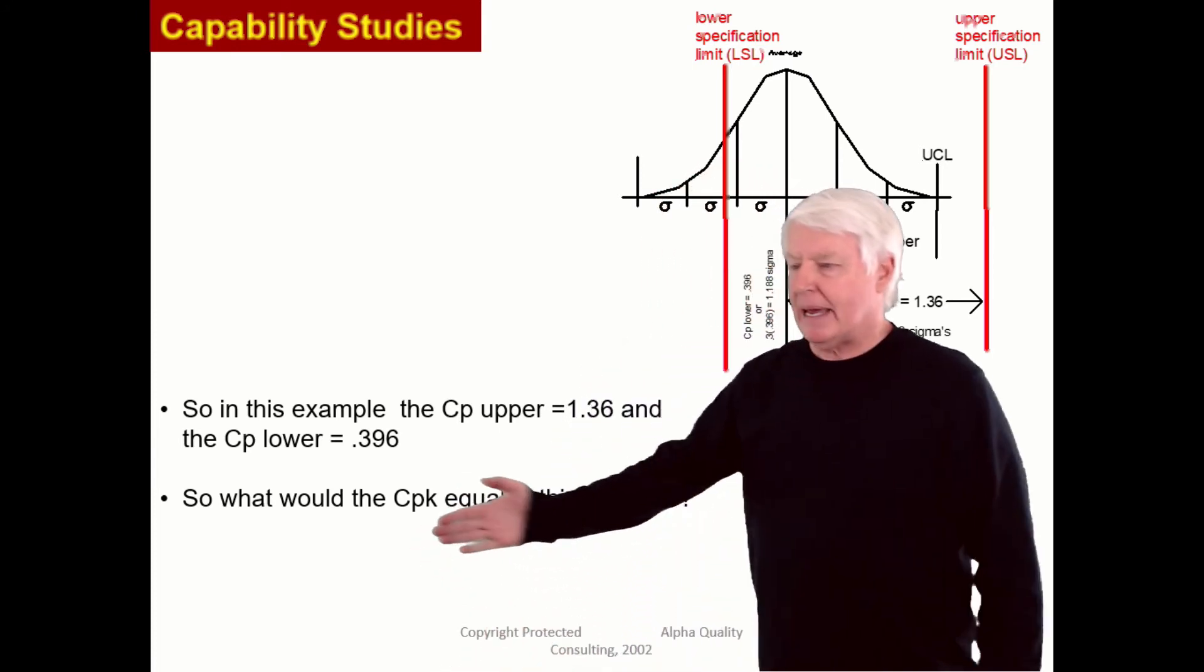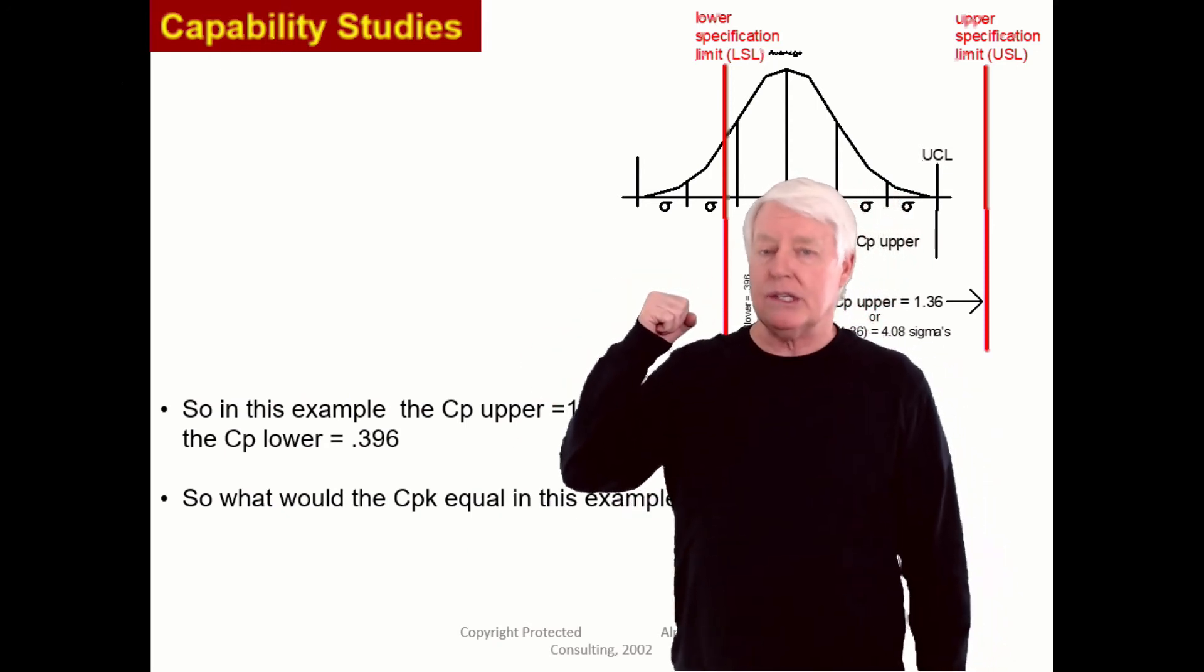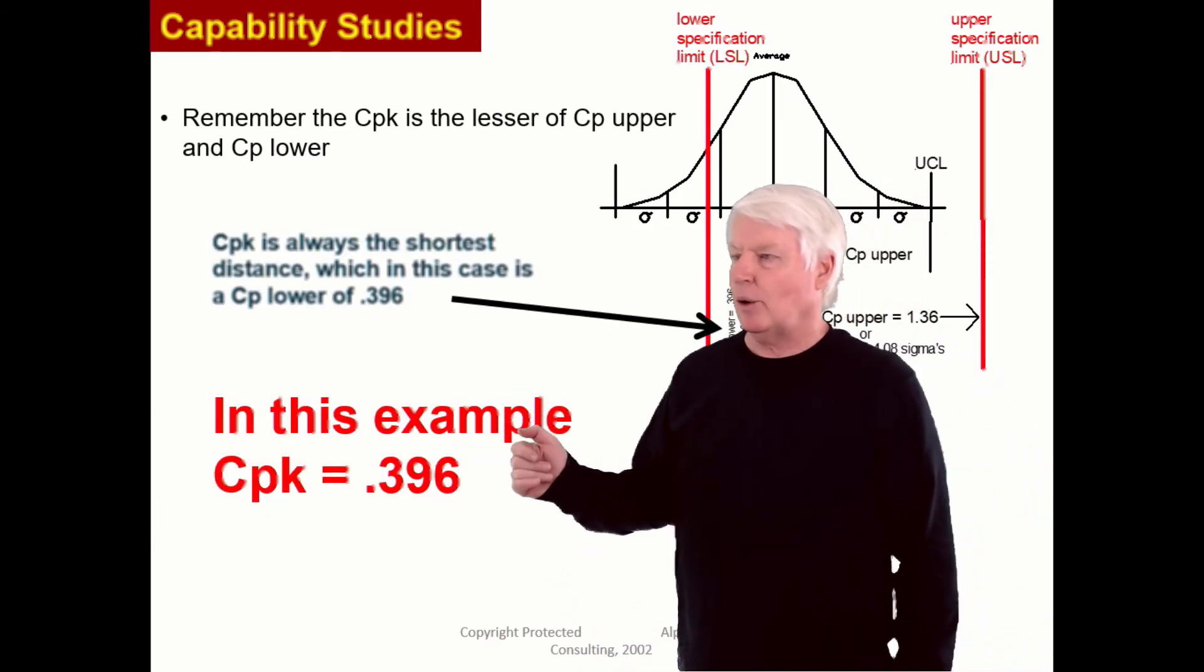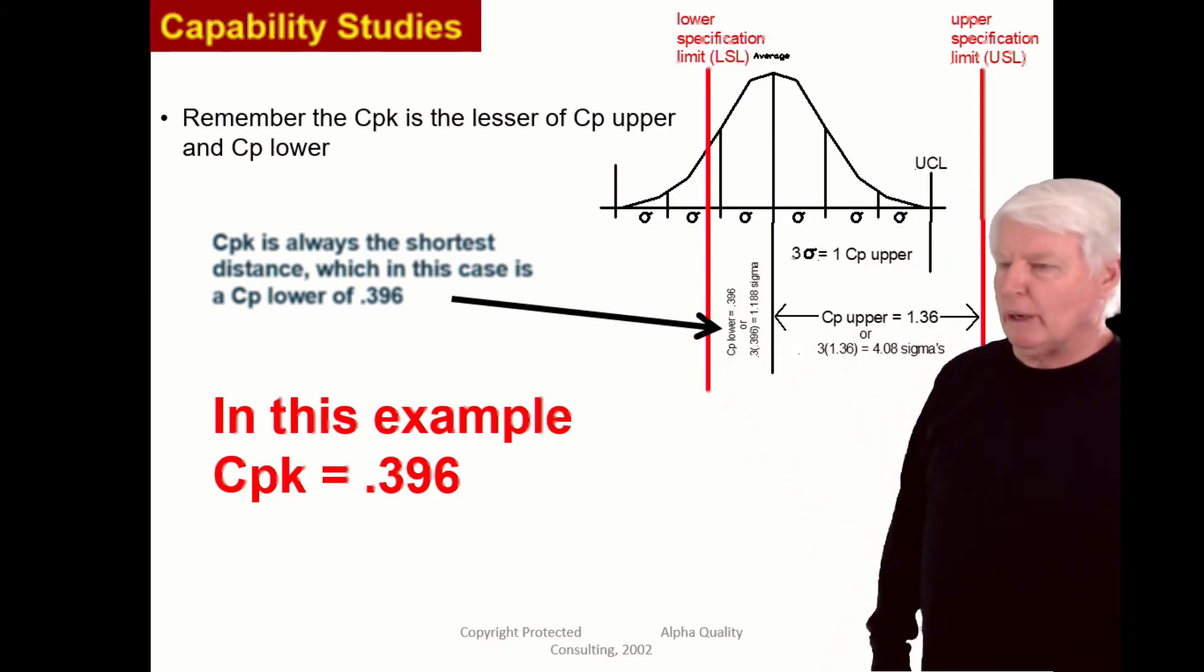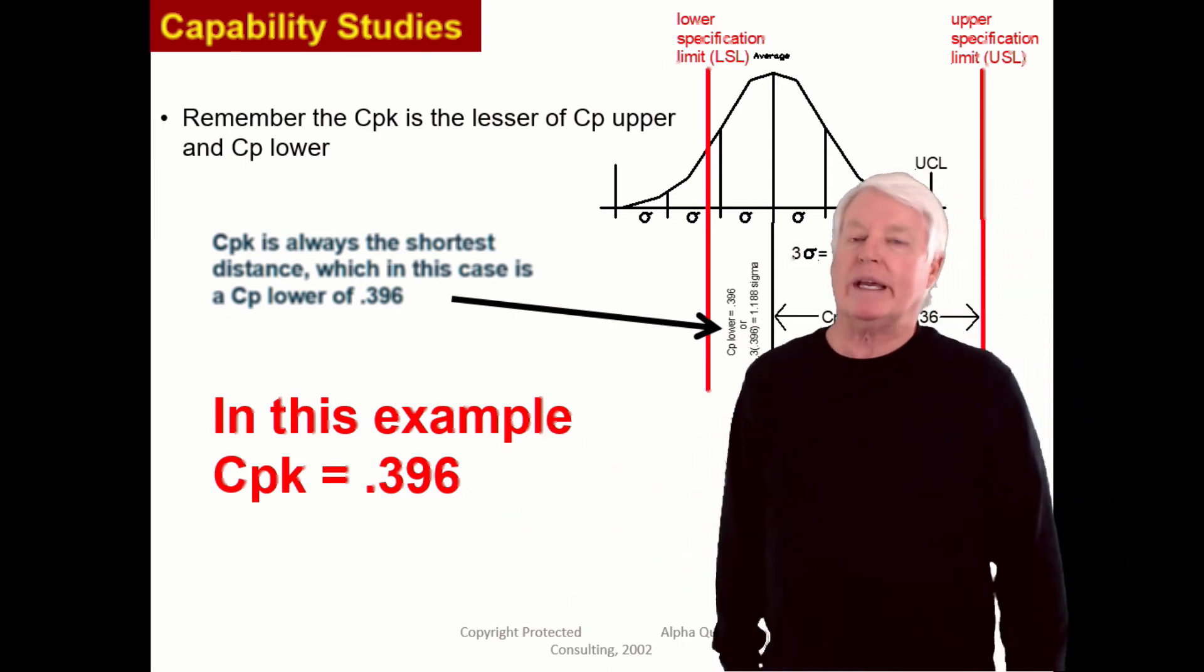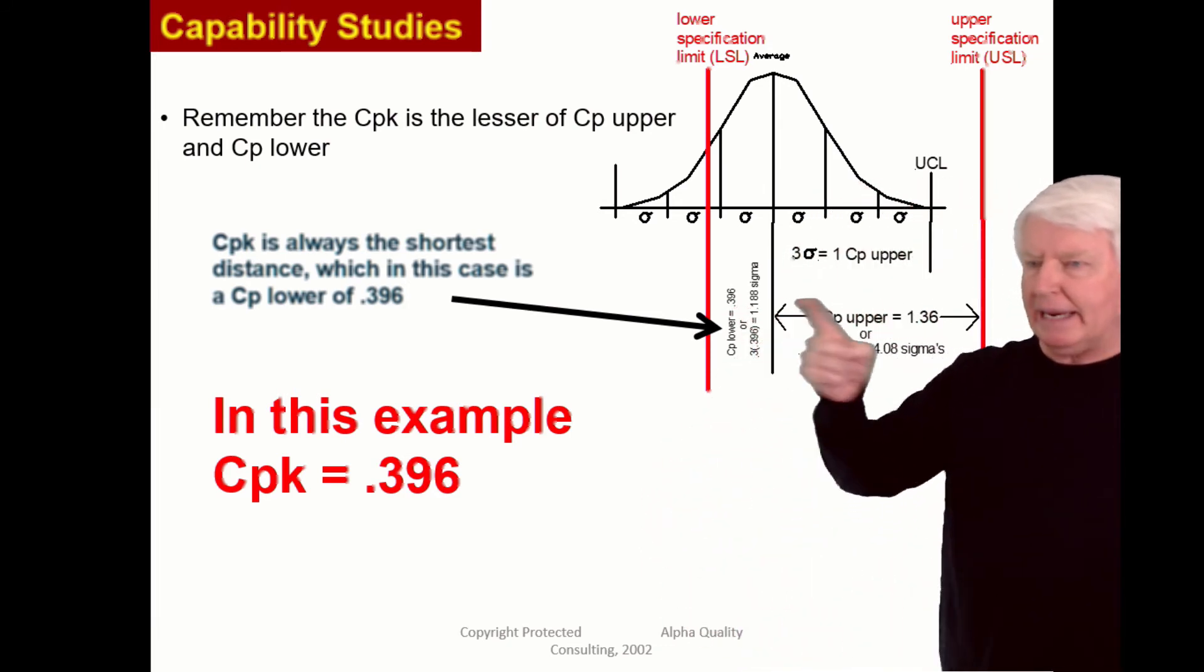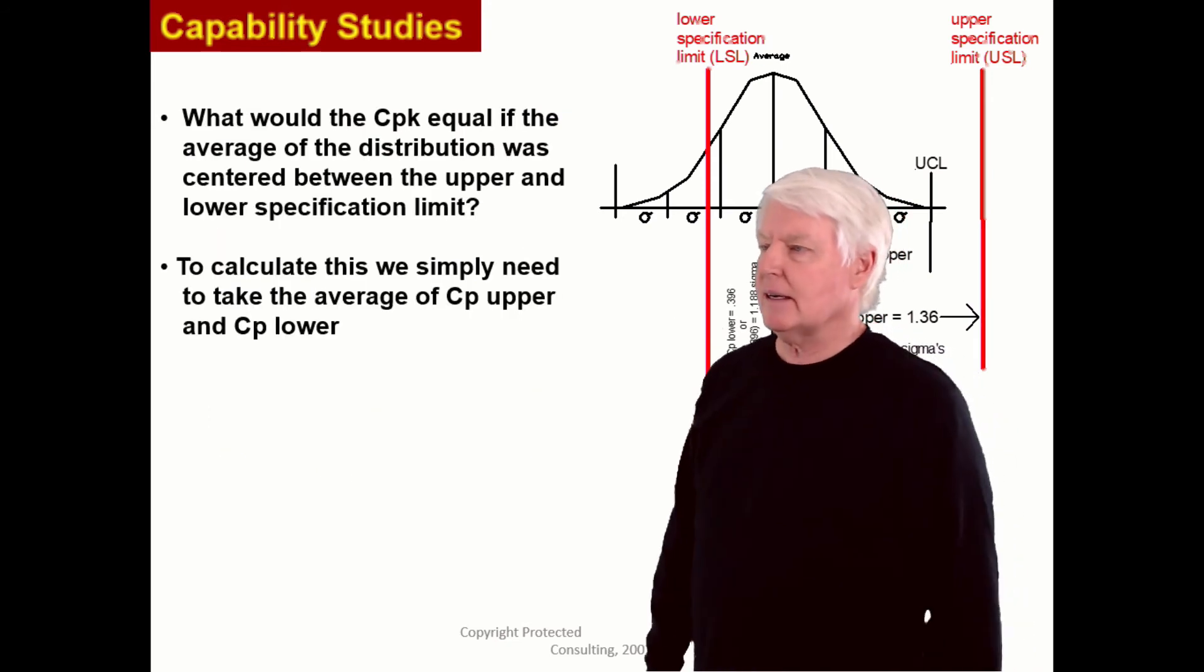CPK is the weakest link. And that makes it easy for purchasing people to call a supplier and say, what's your CPK? That's all they need to know, just the CPK, what's your weakest link? In this case, of course, the CP upper was 1.36, CP lower is 0.396. The weak link here is 0.396. So we call 0.396 the CPK. CPK is the weakest link, the one that has the lesser magnitude of CP upper and CP lower. So hopefully that makes sense to you.